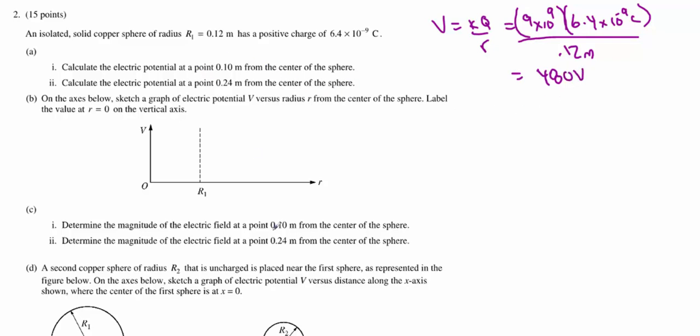Now for part two, we're going to be 0.24 meters from the center. We're going to treat it as if it's 0.24 meters from the center because now we're outside of the sphere. You always treat the center of the sphere as the distance reference point. So 9 by 10 to the 9, 6.4 by 10 to the negative 9 coulombs, then we're going to do 0.24, and you'll notice that means we've doubled our distance so our voltage should be cut in half, and it is: 240 volts.